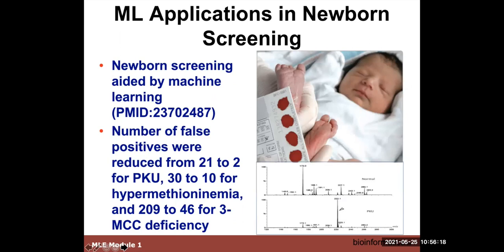In newborn screening, blood spots are analyzed by mass spec — a heel prick is done, blood is collected, and patterns are analyzed for things like higher abundance of phenylalanine indicating phenylketonuria, or higher abundance of methionine. These signals are noisy, and using machine learning to recognize signals and measure their abundance improves the overall performance for recognizing PKU or hypermethionemia. There's a tendency for humans to over-predict with many false positives — machine learning reduced those by a significant margin.